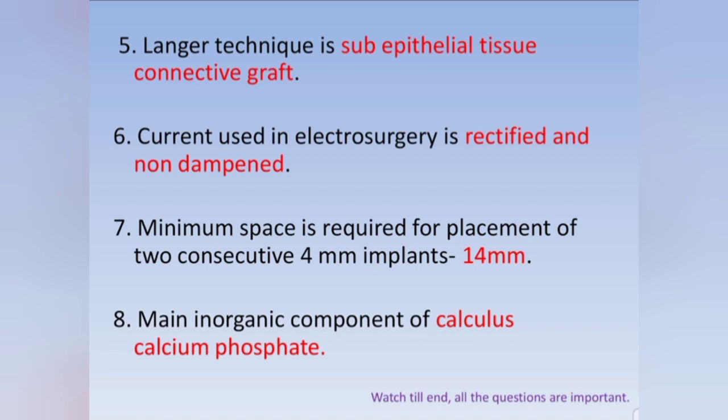The minimum space required for placement of two consecutive 4 mm implants is 14 mm. The calculation: two 4 mm implants = 8 mm, plus 3 mm between the two implants = 11 mm. Then 1.5 mm space needed between tooth and implant on each side, so 11 + 1.5 + 1.5 = 14 mm. I'll explain this calculation in detail with pictures in another video.